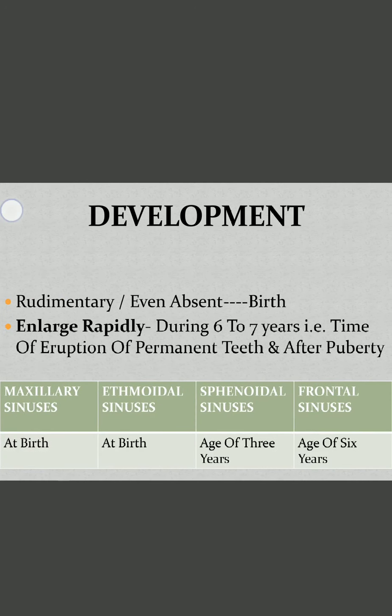Regarding development, at the time of birth the sinuses are sometimes absent or rudimentary — meaning imperfect development. Proper development, aeration, and enlargement of the sinuses occurs at age 6 to 7 years, coinciding with the eruption of permanent teeth, and then further enlargement occurs after puberty in adult life. Maxillary and ethmoidal sinuses are present at birth; the maxillary sinus is the first to develop. The sphenoidal sinus develops by age 3 years and the frontal sinus by age 6 years, with full aeration by age 6 to 7 years.